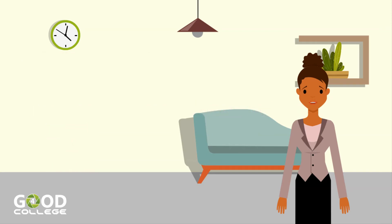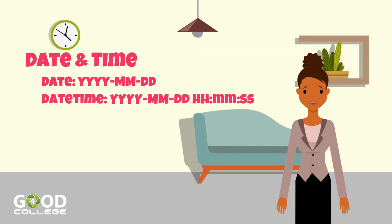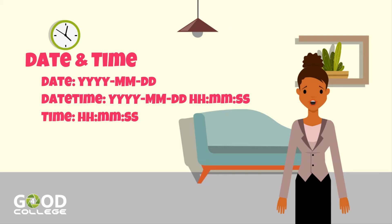The last category presented in this class is Date and Time. In this category we can find: Date, which stores only the date value in the format year, month, day; DateTime, which stores date with time in the format year, month, day, hour, minute, second; and Time, which stores only the time value in the format hour, minute, second.